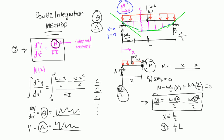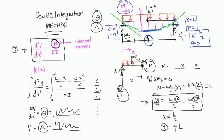Similarly, at x = L we reach roller B, and y = 0 there as well, since there's no deflection at that support assuming no settlement. Also, at x = L/2, the mid-span, the slope is equal to zero. These are the basic boundary conditions for a simply supported beam, and you'll pick up more through examples and in your classes.